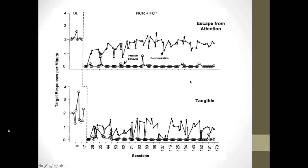If we conduct an observation — let's say for 30 minutes, observing a student in the classroom and measuring their behavior according to the operational definition — that record is then converted to some type of measure and graphed.